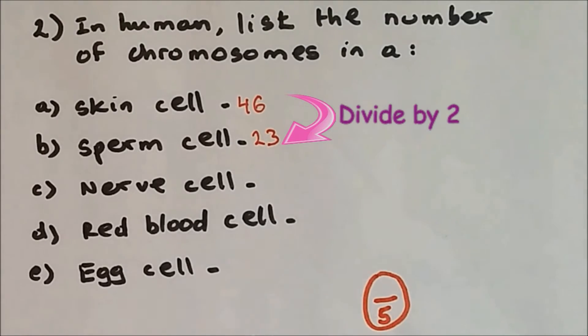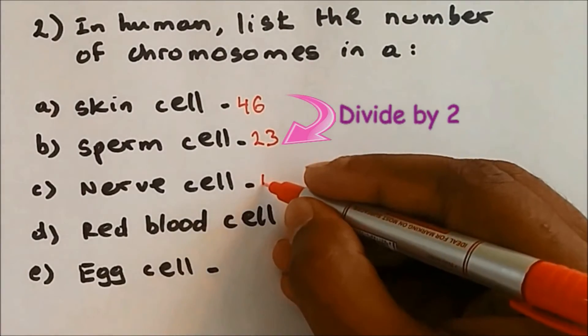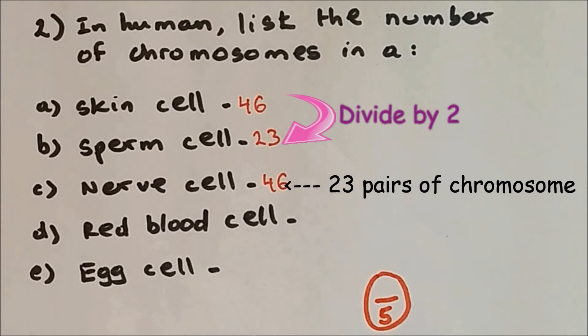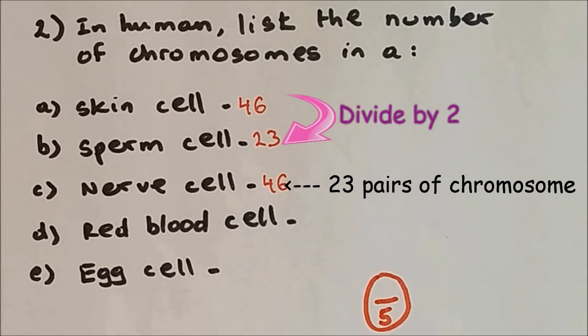A nerve cell is a body cell, so therefore contains 46 chromosomes. Red blood cells have no nucleus, so the number of chromosomes in red blood cells is zero.